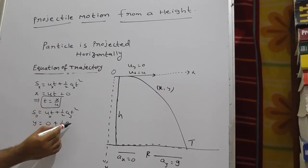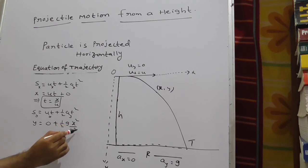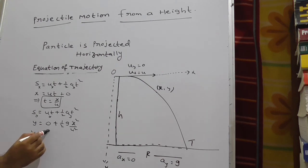What is t here? x by u. Substitute here. This gives x squared by u squared. Now, y is equal to g by 2u squared into x squared.